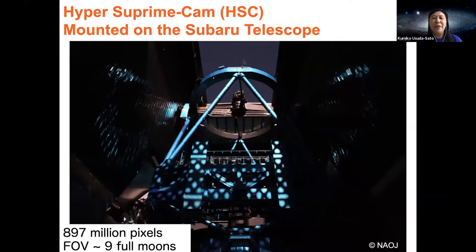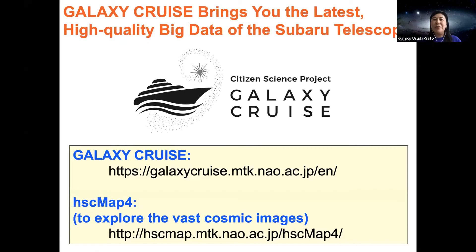In Galaxy Cruise, we use the big data taken with Hyper Suprime-Cam, HSC, mounted on the Subaru telescope. NAOJ's Subaru telescope is the 8.2 meter optical infrared telescope built on Mauna Kea, Hawaii. Over here we have the 8.2 meter primary mirror, and at the center of the top ring is HSC, a really giant digital camera with an extremely wide field of view which covers about nine full moons. Galaxy Cruise uses this big data to bring you the latest high-quality images.